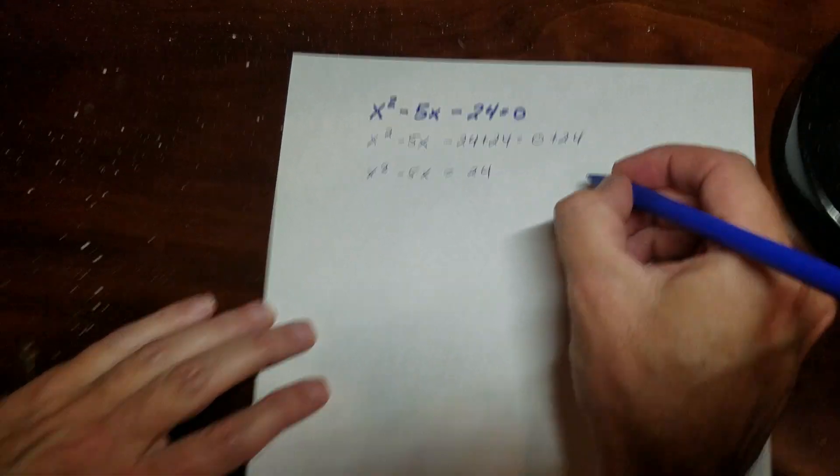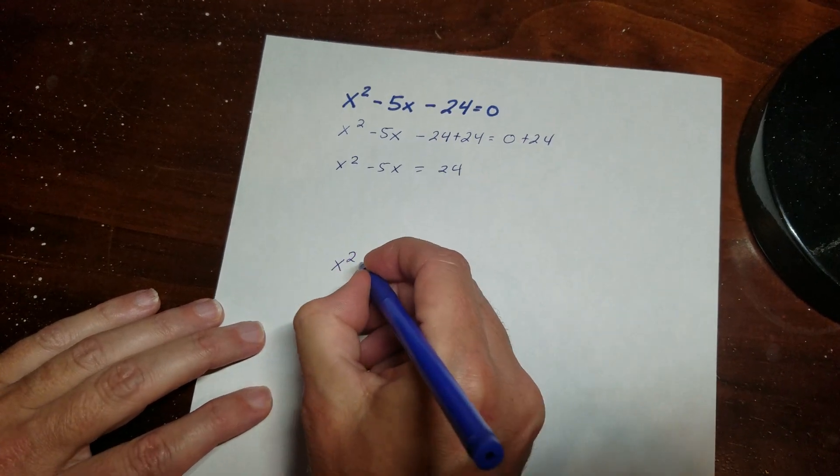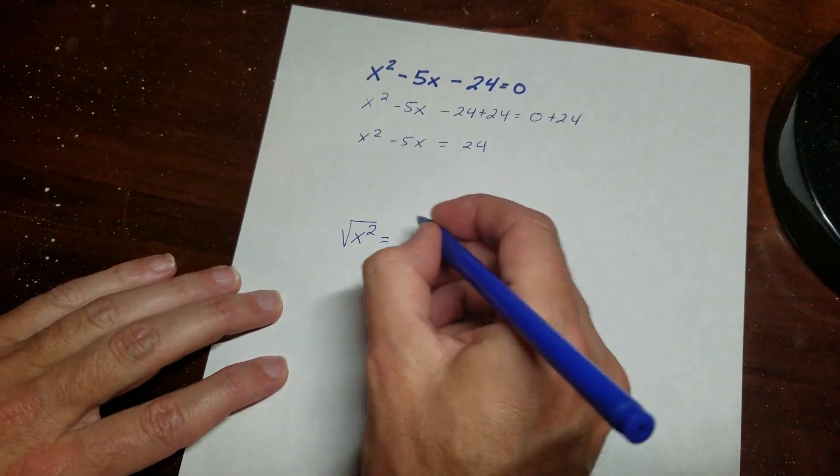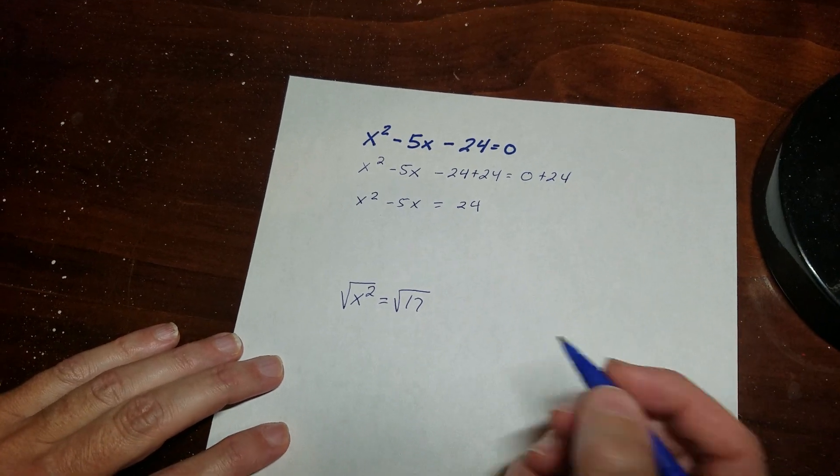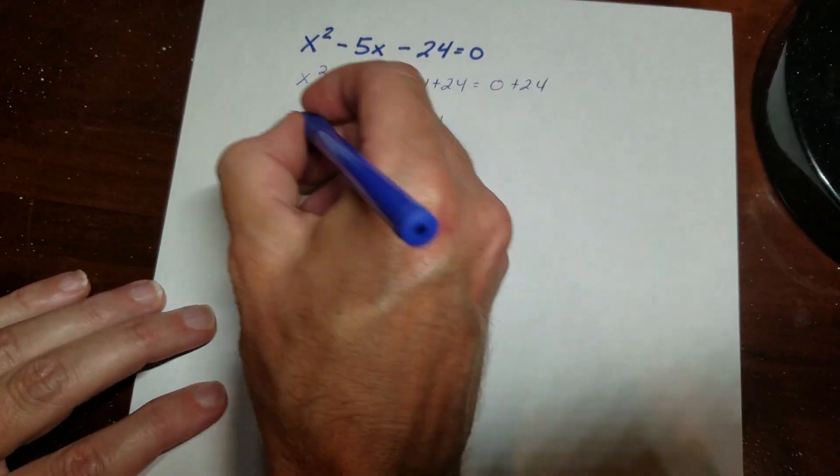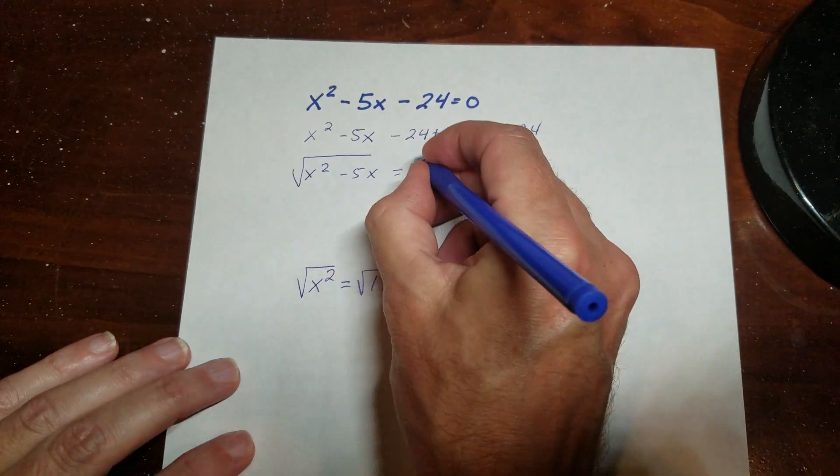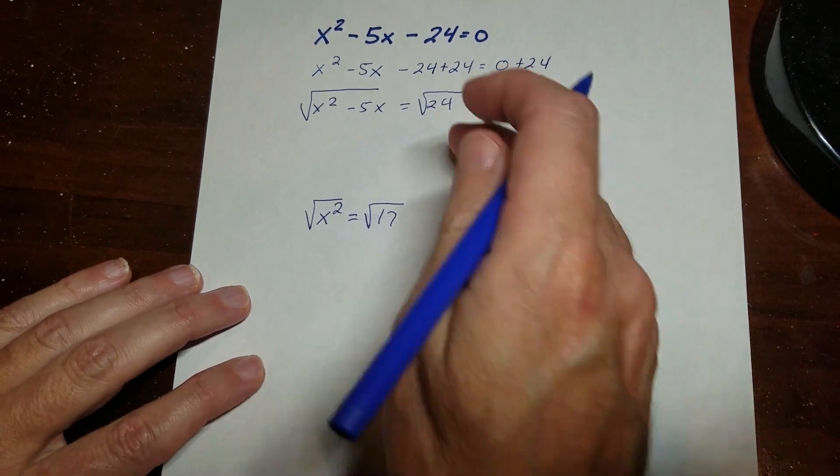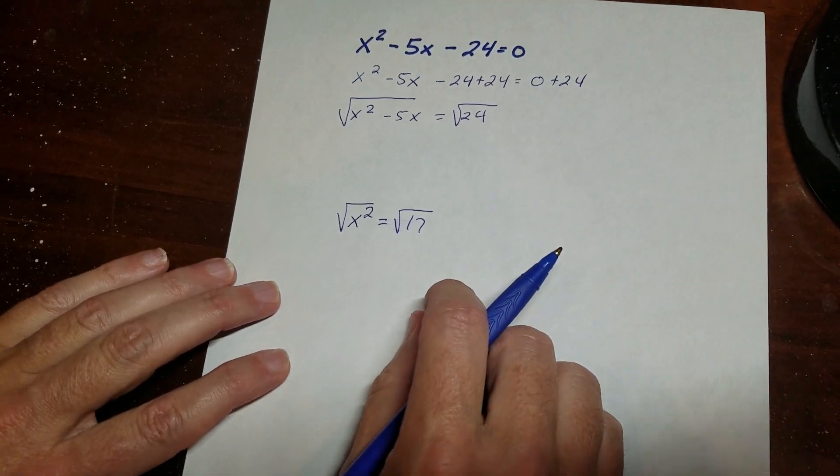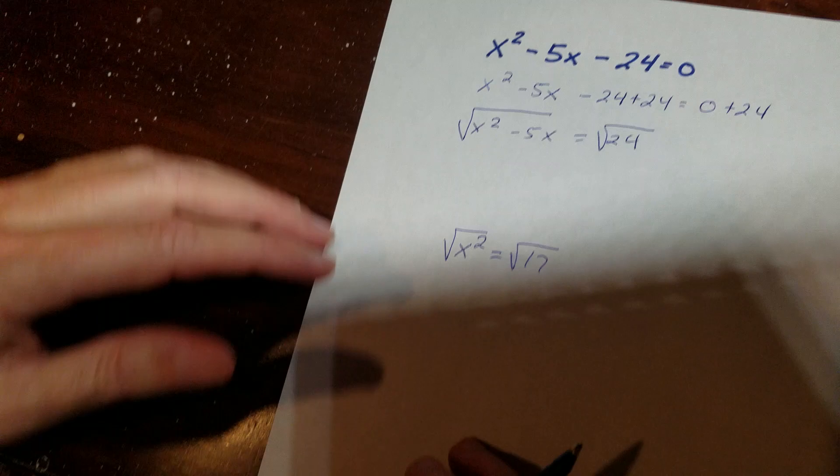And in the past we've done equations like this where you've got x squared is equal to 17, and you can square this and square this, and then you're done. But you can see that with this thing, if I start doing that, it gets really messy. So this is not going to work.